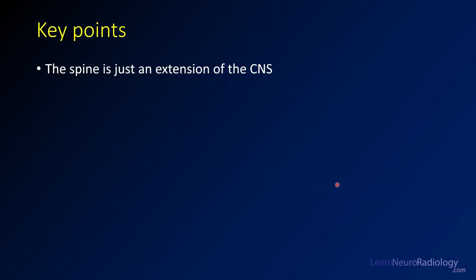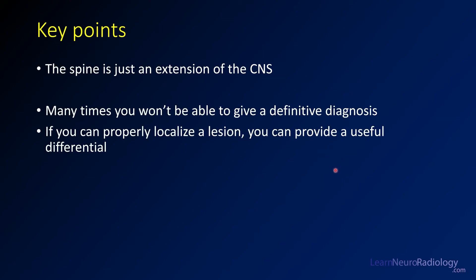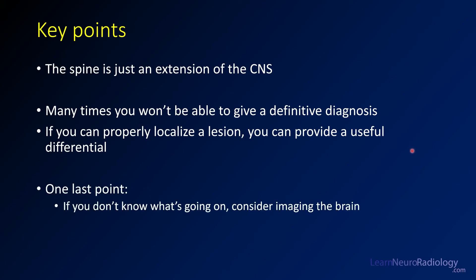The key point when thinking about spinal tumors is that the spine is just an extension of the central nervous system. Anytime you see something, think about what your differential would be if this were a similar lesion in the brain — this can be very helpful. Many times you won't be able to give a definitive diagnosis, but a useful differential helps your surgeons and other physicians determine next steps. One last tip: if you don't know what's going on, consider imaging the brain. You might see a similar lesion there — for example, a drop metastasis — or something that looks like a tumor in the spine might be demyelinating disease if the brain also shows demyelinating lesions.